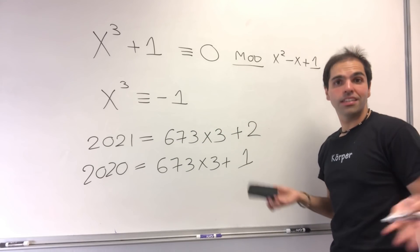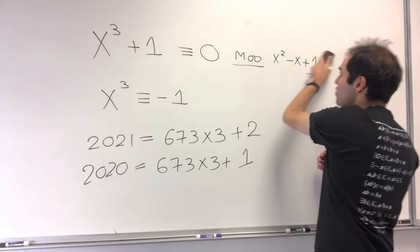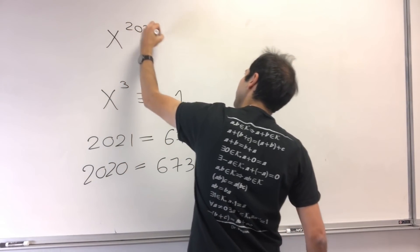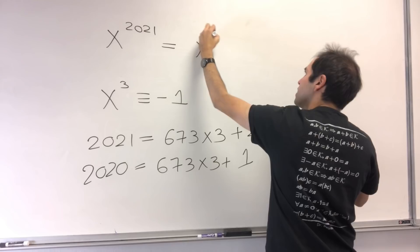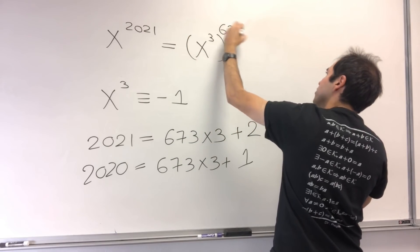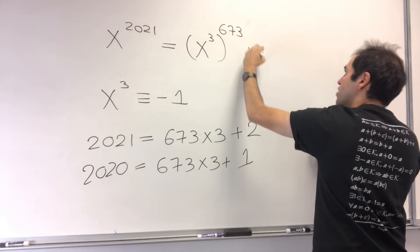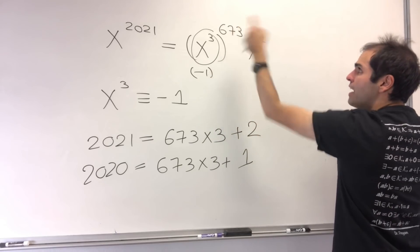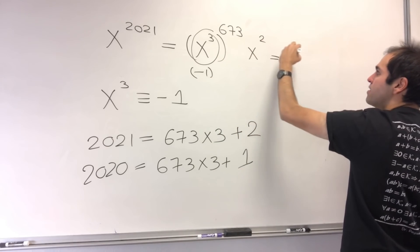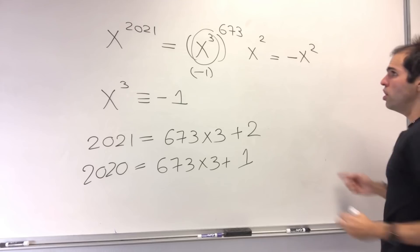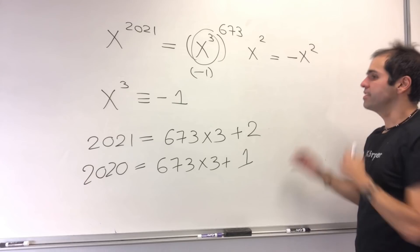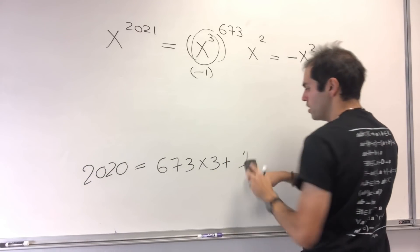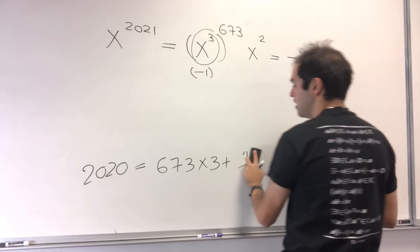So, since x^3 is kind of sort of like -1, let's see what happens to x^2021. So, x^2021, that's the same thing as (x^3)^673 times x^2. But x^3, we've seen, is like -1, and (-1)^673 becomes -1. So, x^2021 is the same thing as -x^2. And x^2020, well, because of that 1, it'll be like -x.